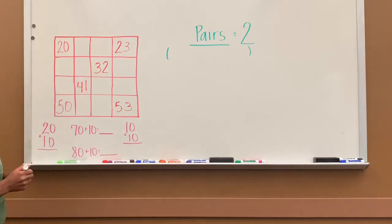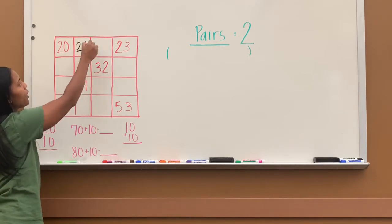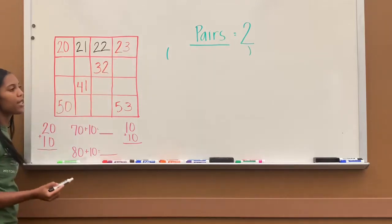I'll start with my 20 up here in the top left corner. So I'm going to finish it this way. So what would I put here? 21, and then I'll put 22. 23 is the end.